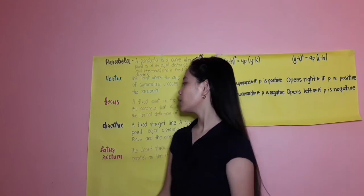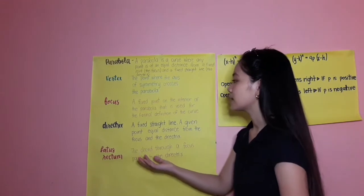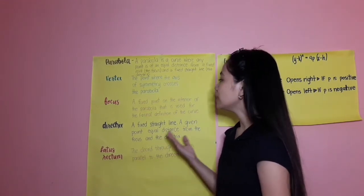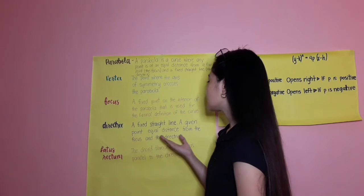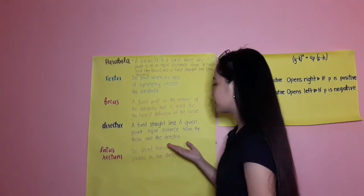Next, we have a directrix, a fixed straight line. Any given point equals distance from the focus and the directrix.